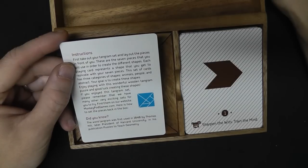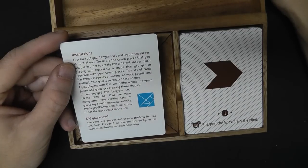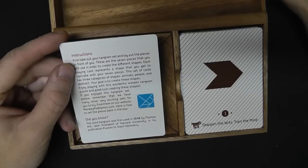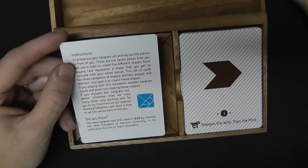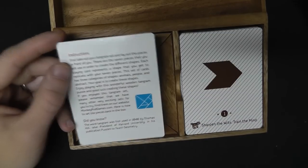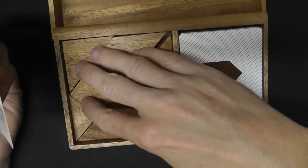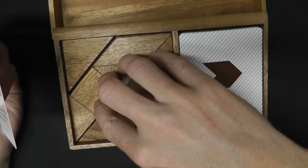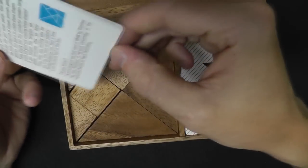So this is the instructions. The set of cards has three categories of shapes: animals, people, and abstract. Your goal is to create these shapes. You must use all seven pieces.